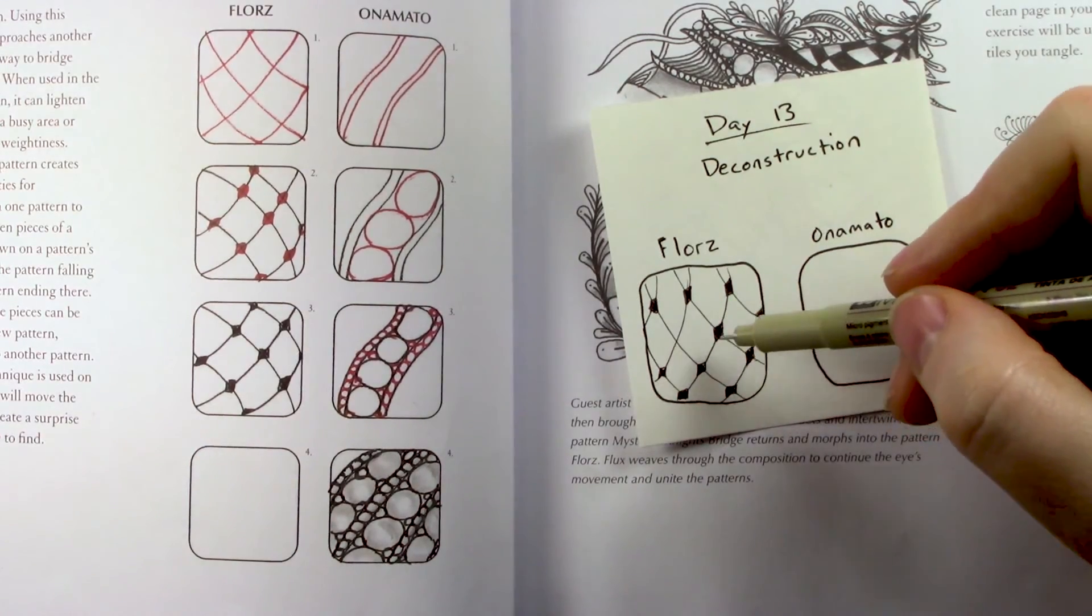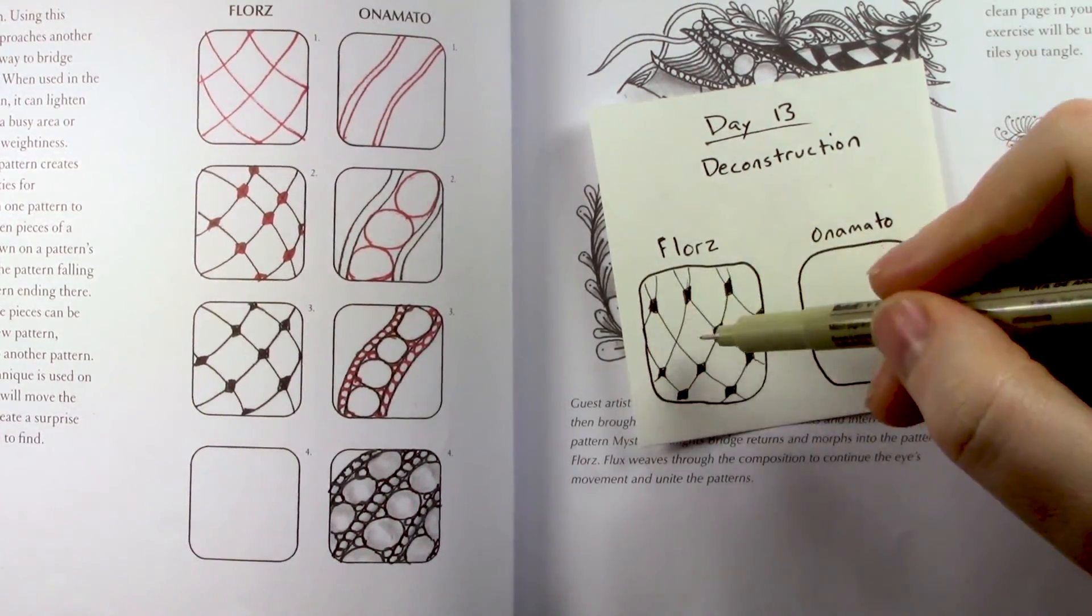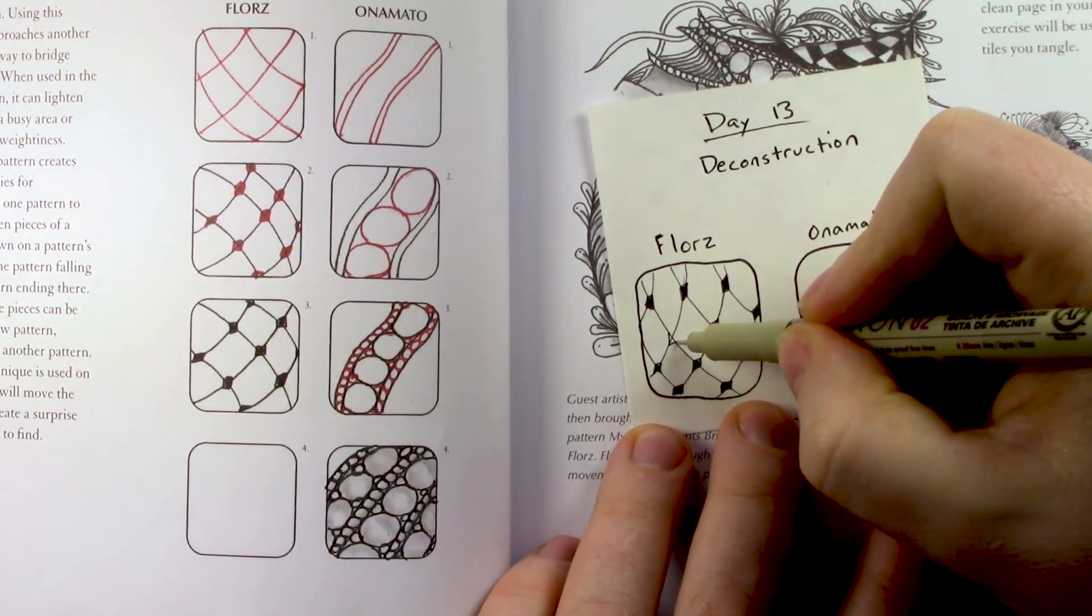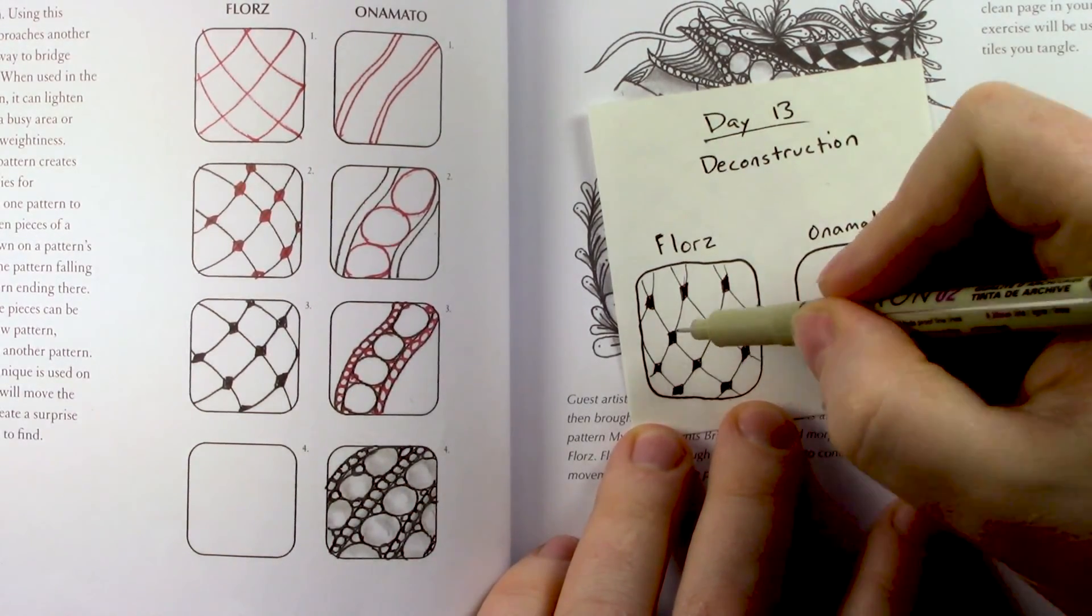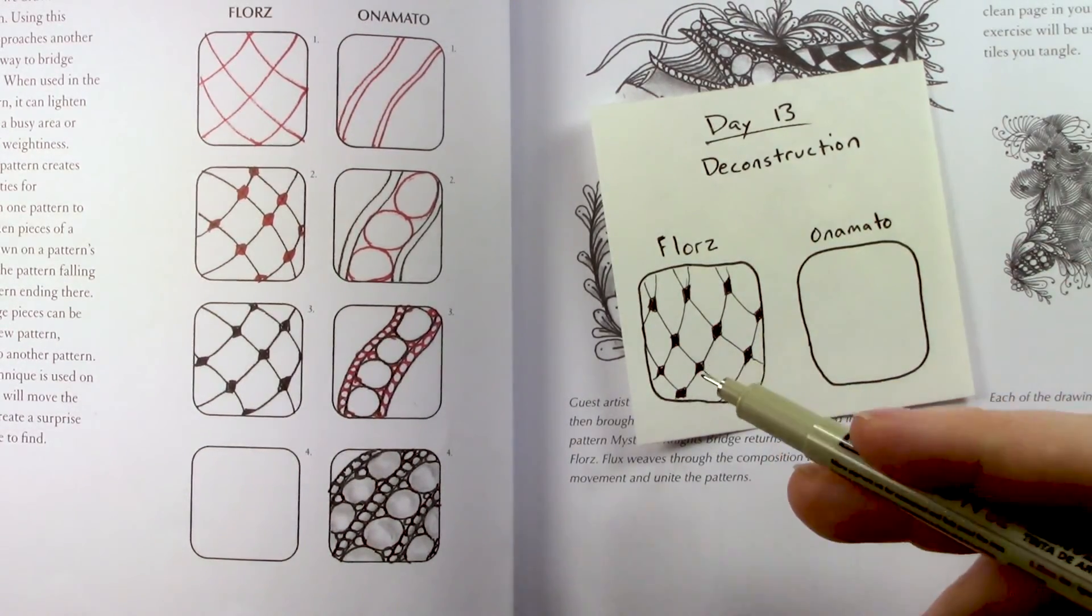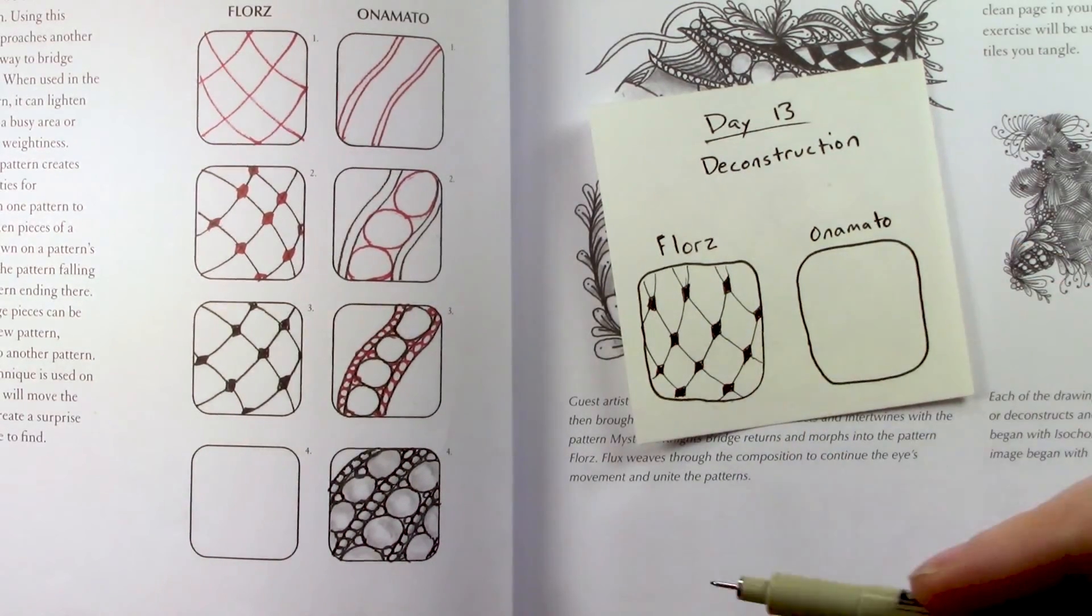As a matter of fact, one of the things that I like to do when I want a really light and airy pattern is I do exactly the same thing as this, except I make a little circle and don't fill it in. Instead of making a diamond, I'll just make a little circle and don't fill it in. And that makes a really even lighter and airier pattern than this. So that would be considered a tangilation of Floors.